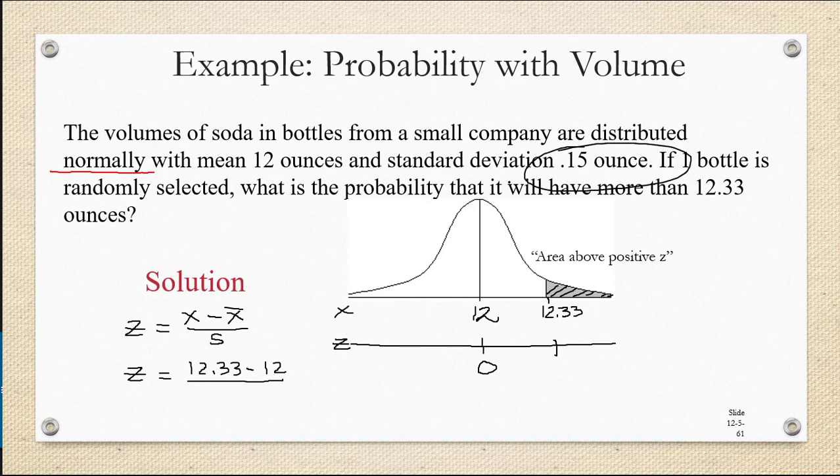Now be careful when you plug this into your calculator that you don't have an error due to order of operations. The subtraction must come before the division. So you either need to put parentheses around your subtraction or hit enter after you subtract 12 before dividing by 0.15. The result is a z-score of 2.2. So I'm going to write 2.2 on my second number line.